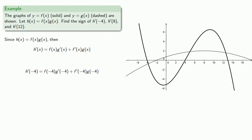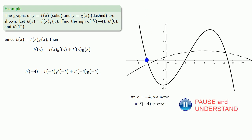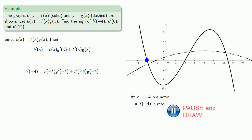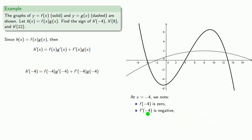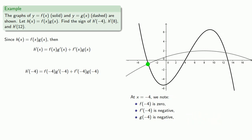Because our ability to read the graph accurately is limited, we're going to focus on the sign of the values. At x equals negative 4, f of negative 4 is 0. f prime of negative 4 — that's the slope of the line tangent to the graph — and we see the tangent line slopes downward, so f prime of negative 4 is negative. g of negative 4 is negative because the graph of y equals g of x is below the x-axis. If we draw the tangent line to g at negative 4, we see it slopes upward, so g prime of negative 4 is positive.